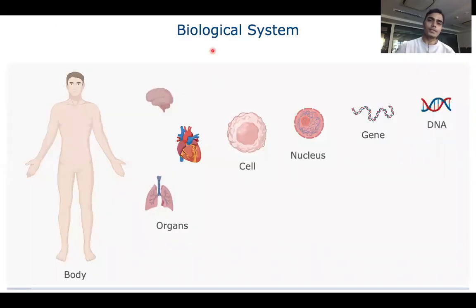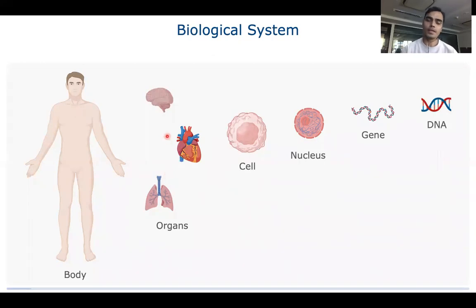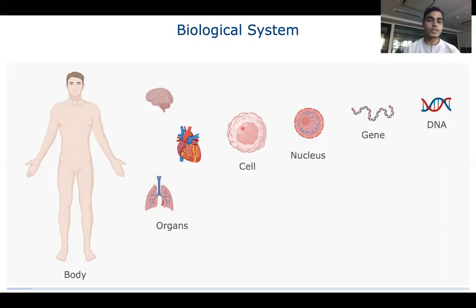The human body is a biological system made up of different organs and tissues, and these organs and tissues are made up of cells. The cell is the reason these organs and tissues are different in their structure and function. The protein composition inside the cell regulates the structure and function of a cell — it is a key component in determining that structure and function.